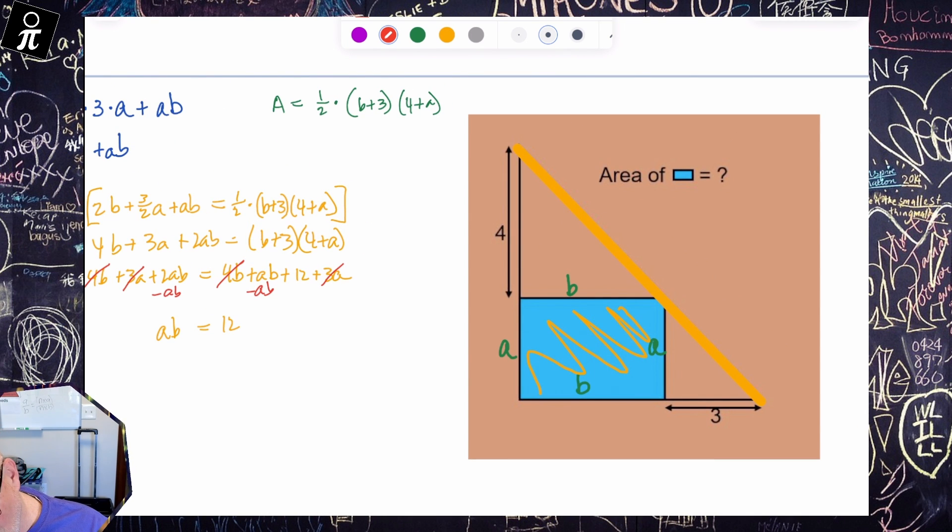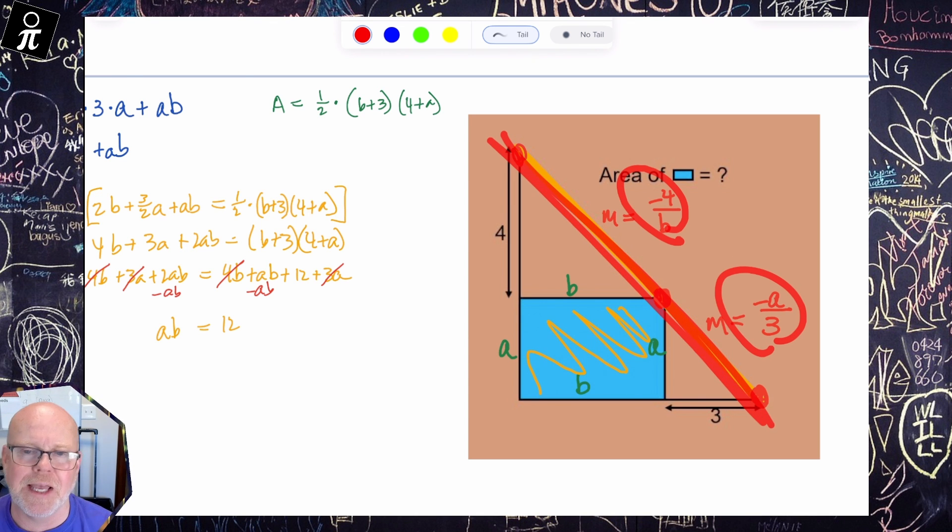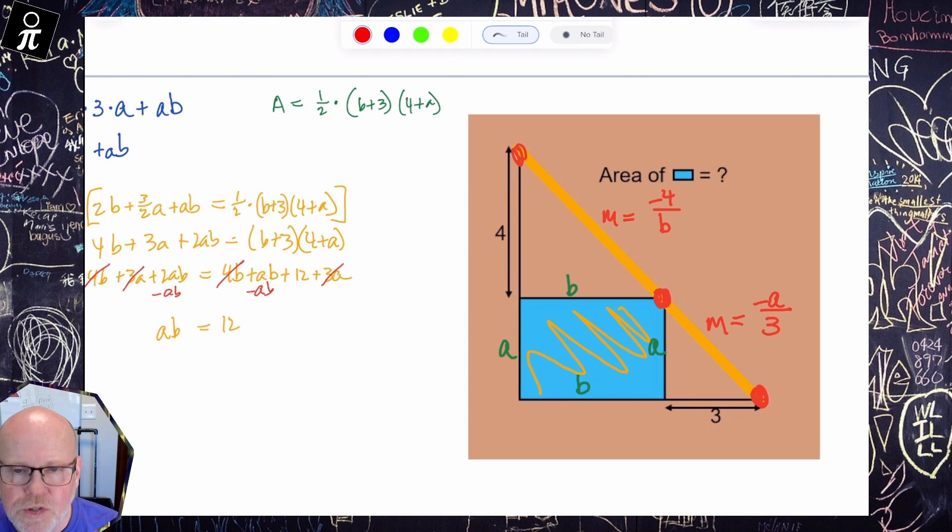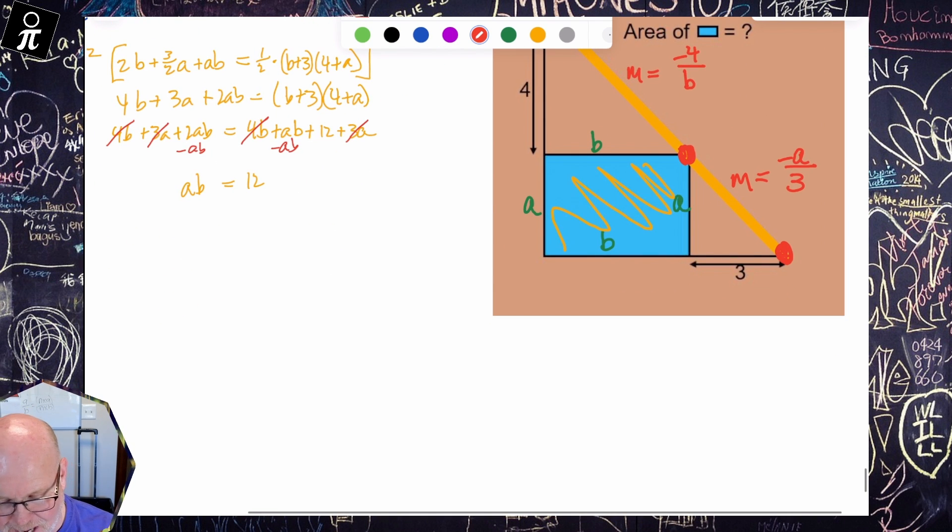So this slope to go from here to here, the slope goes down four over B. So here it goes down four over B. So there's our slope. But then from this middle point to this bottom point, our slope is something different, isn't it? Our slope here is down A over three. So our slope is down A over three. And yet, even though these two slopes look different, it's all part of the same line. So we really know that those two slopes, even though they look different, are actually the same. So we now know that negative four over B is equal to negative A over three.